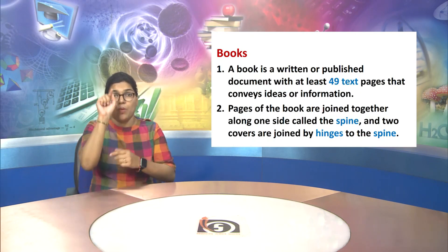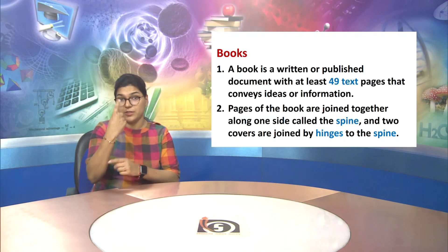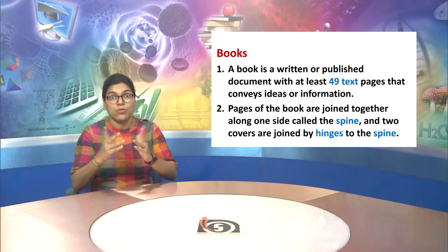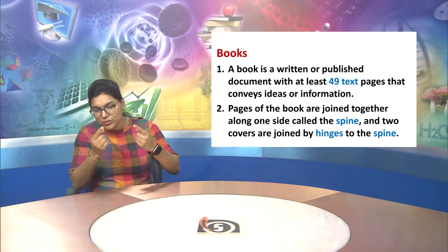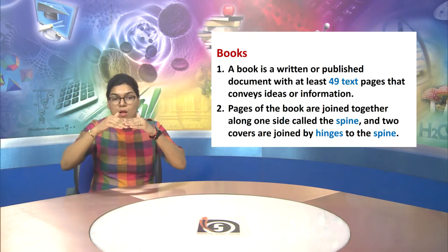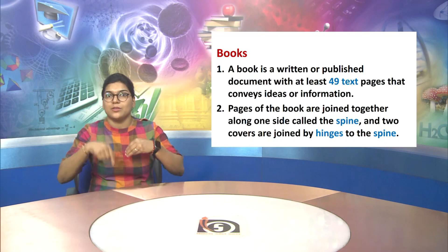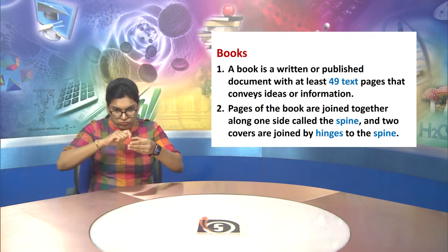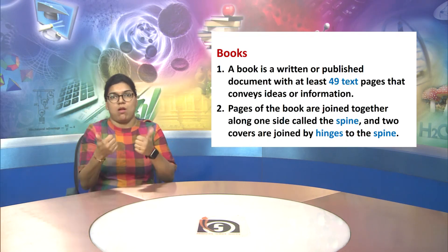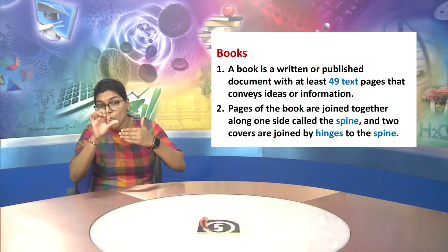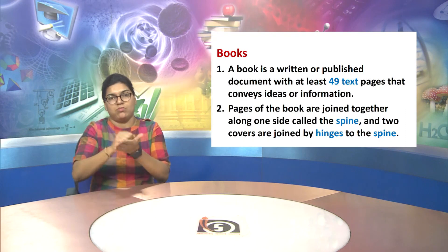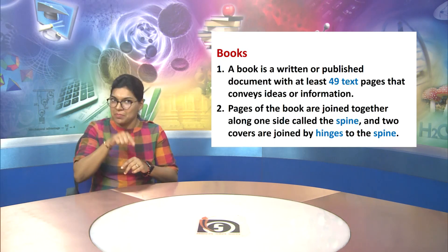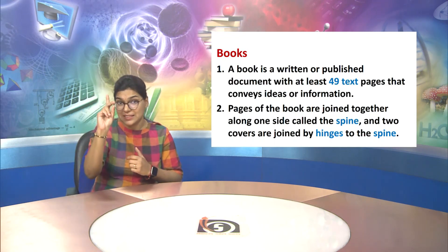Let us now understand the concept of books. A book is a written or published document with at least 49 text pages that convey ideas or information. It is important to remember the number of pages needs to be at least 49 for a book.